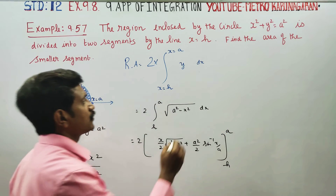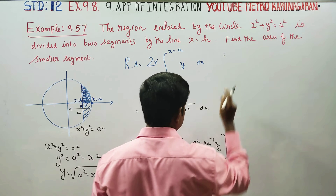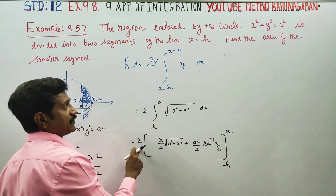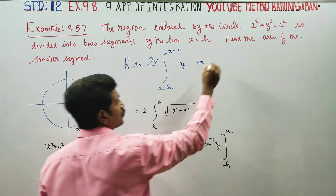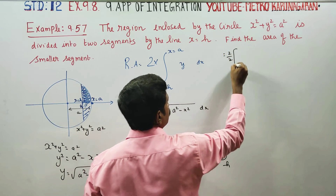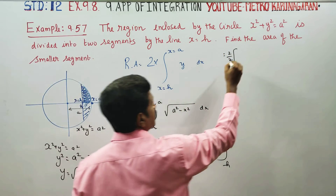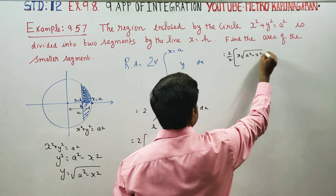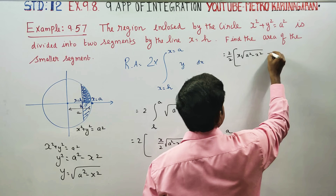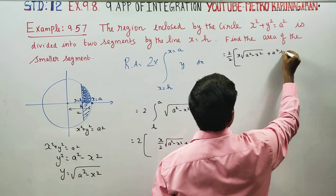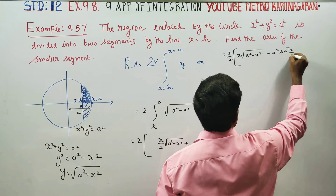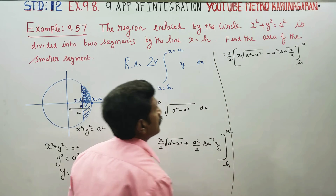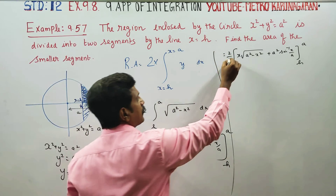This is the formula, 2 times. After canceling 2 by 2, we get: x√(a² − x²) + a² sin⁻¹(x/a), with limits h to a. Upper limit minus lower limit.